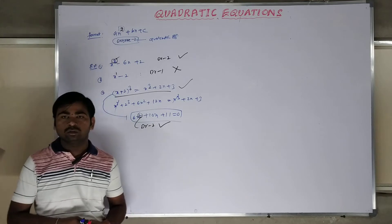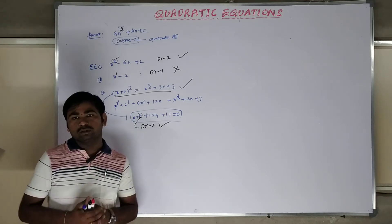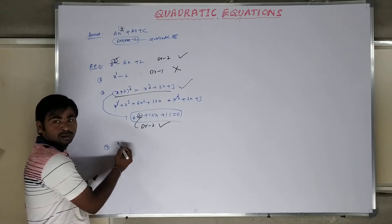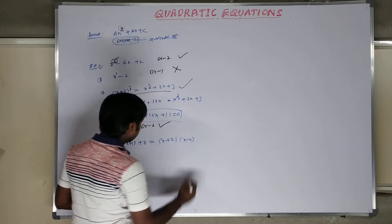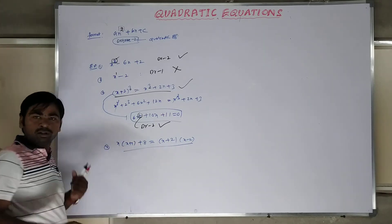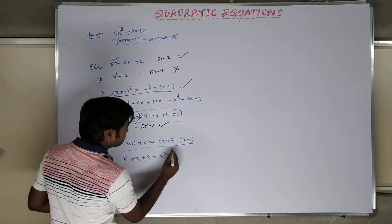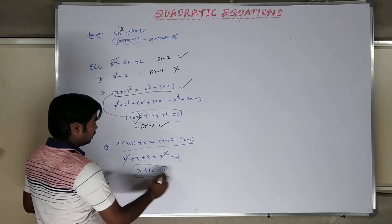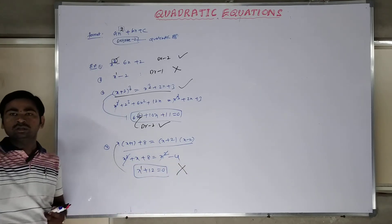Sometimes when you see a question, it will look like a second order but is not; sometimes it will look like a third order but is not. Please convert to a simple equation first, then you can say whether it is quadratic or not. Another example: x(x + 1) + side = (x + 2)(x minus 2). Expanding the left: x² plus x plus side; right side: a² minus b² gives x² minus 4. The x² cancels, leaving x plus 12 equals 0. The order is 1, so it is not a quadratic equation.